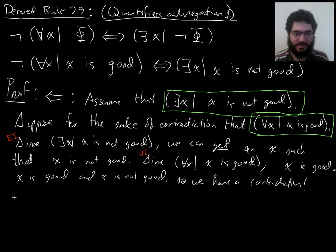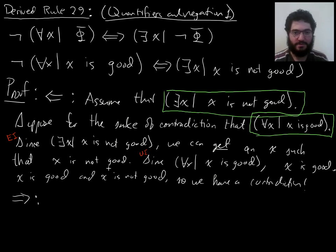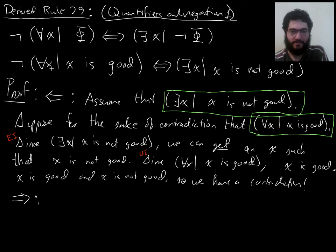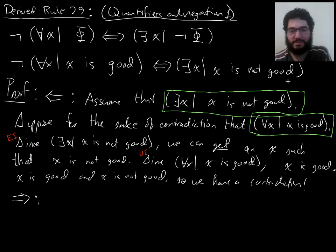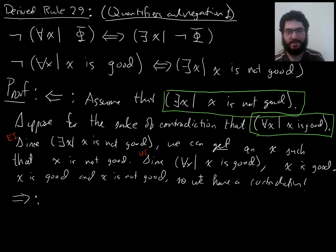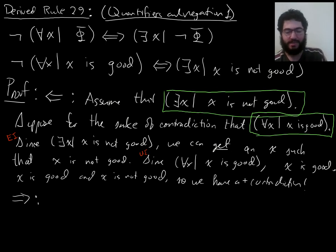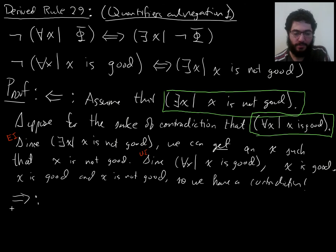So that proves the leftward implication. Now for the rightward implication, and I left this one for second because it's a little bit more involved. If I want to do the rightward implication directly, I found that I had a proof by contradiction inside a proof by contradiction. There's nothing wrong with that, but it's confusing and not so elegant, so if it can be avoided that's better.